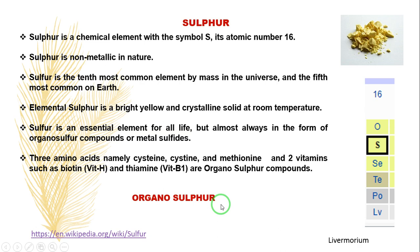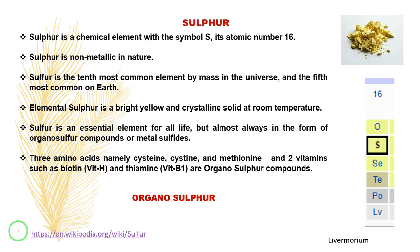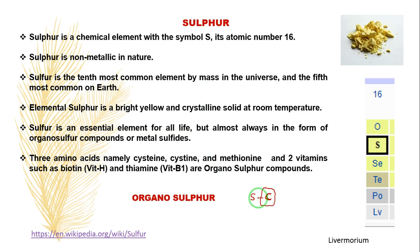What is organosulphur? Sulfur which is directly connected to carbon — because carbon is part of the organic part — so this sulfur is connected to the organic part. That is the reason this is called an organosulphur compound. In all organosulphur compounds, you can observe that sulfur is connected to carbon.